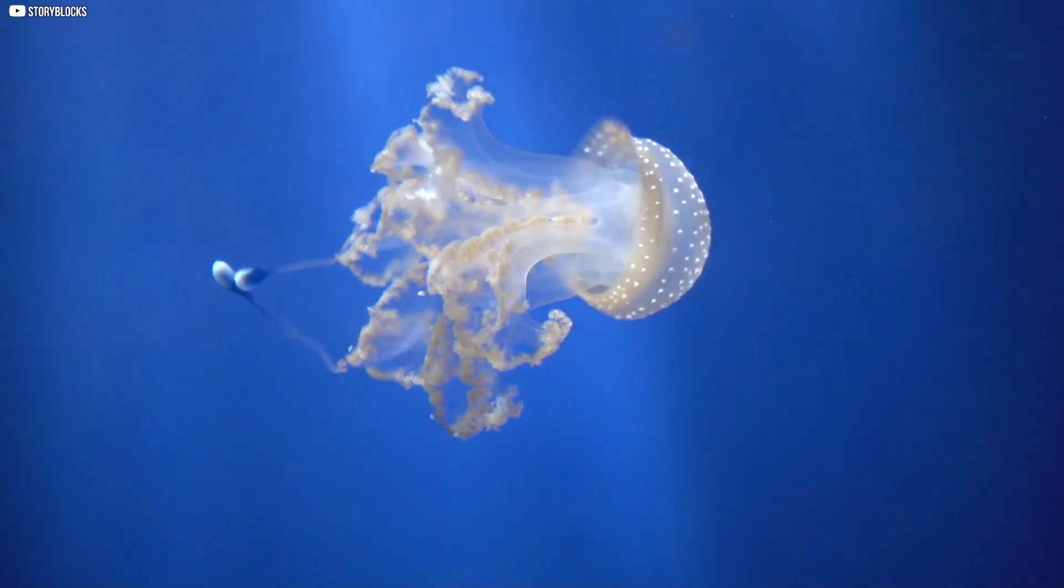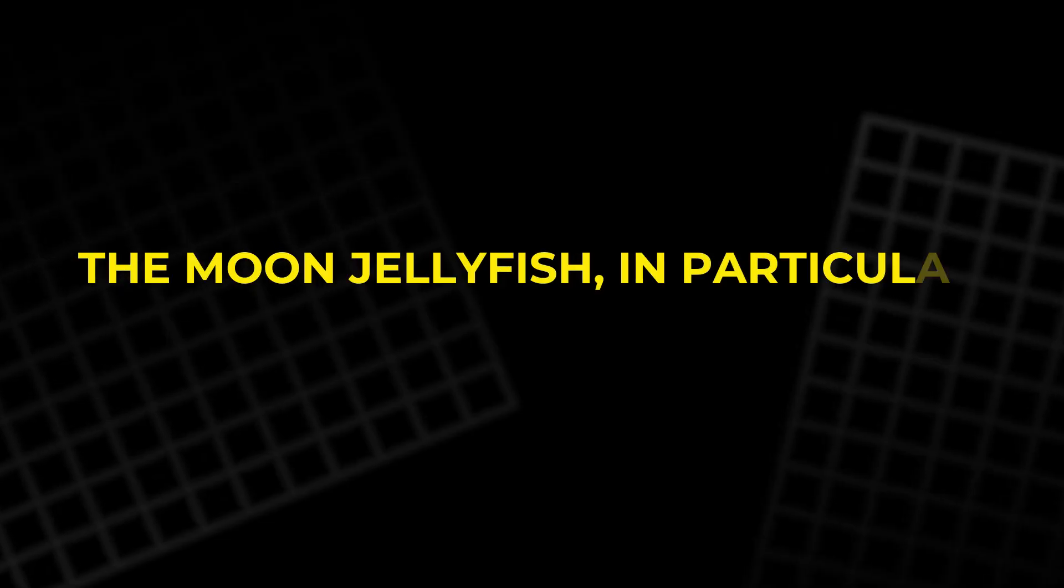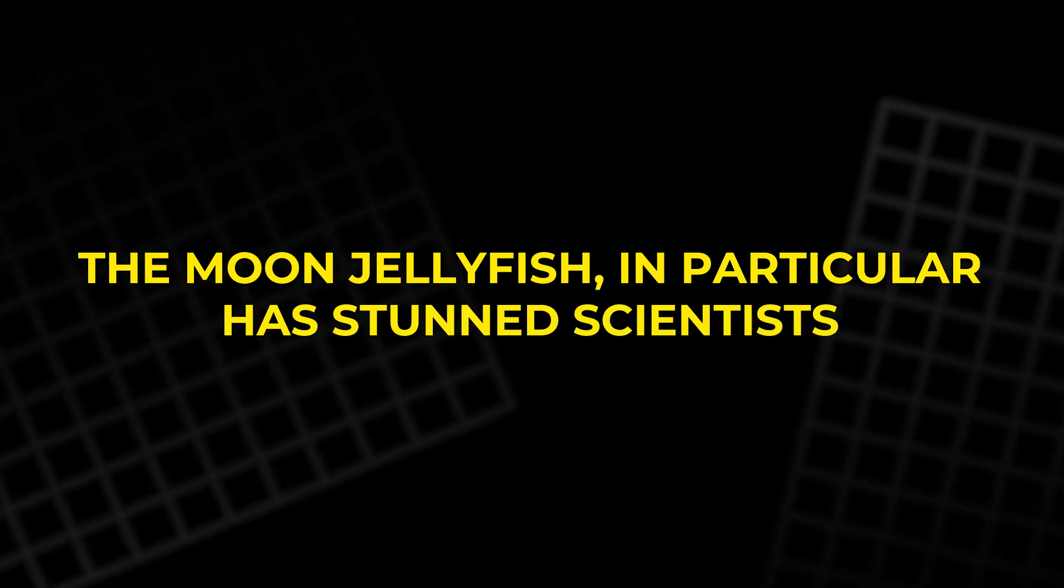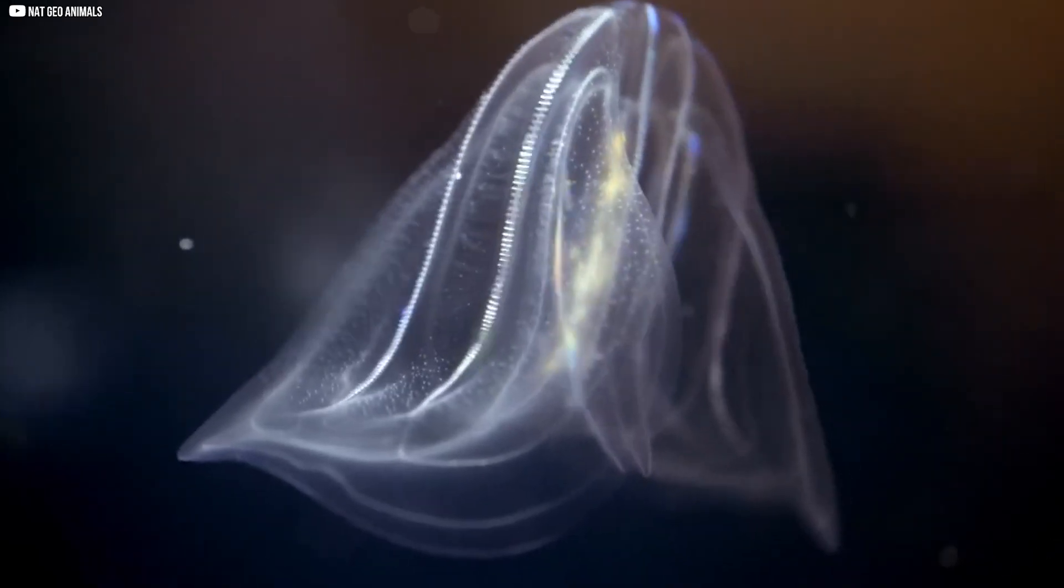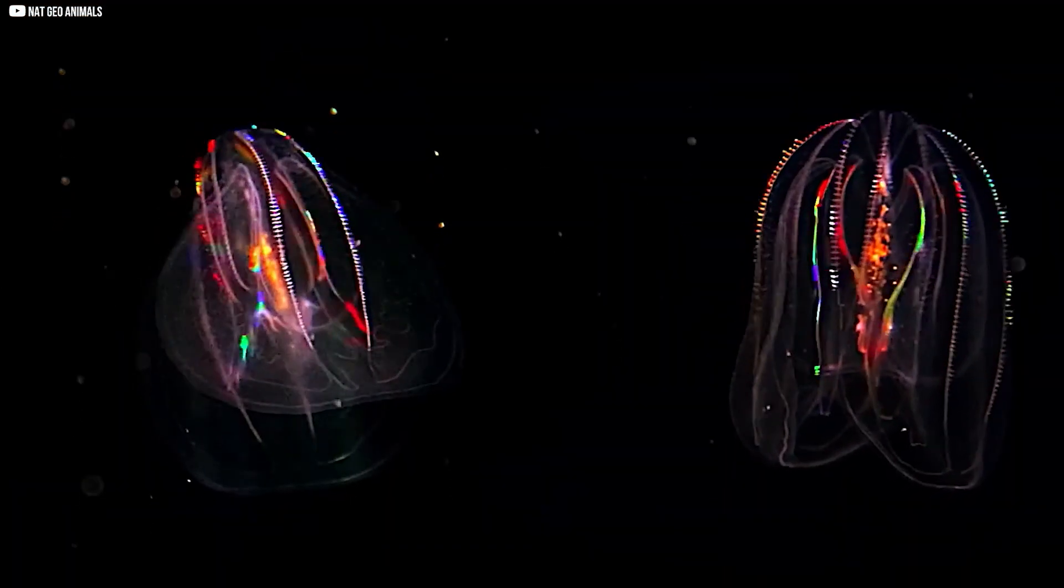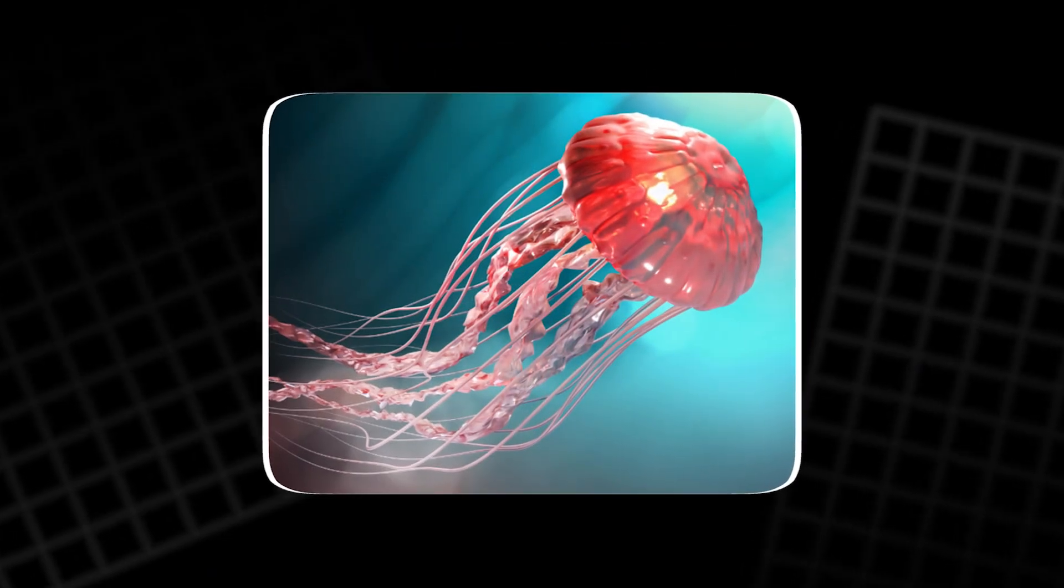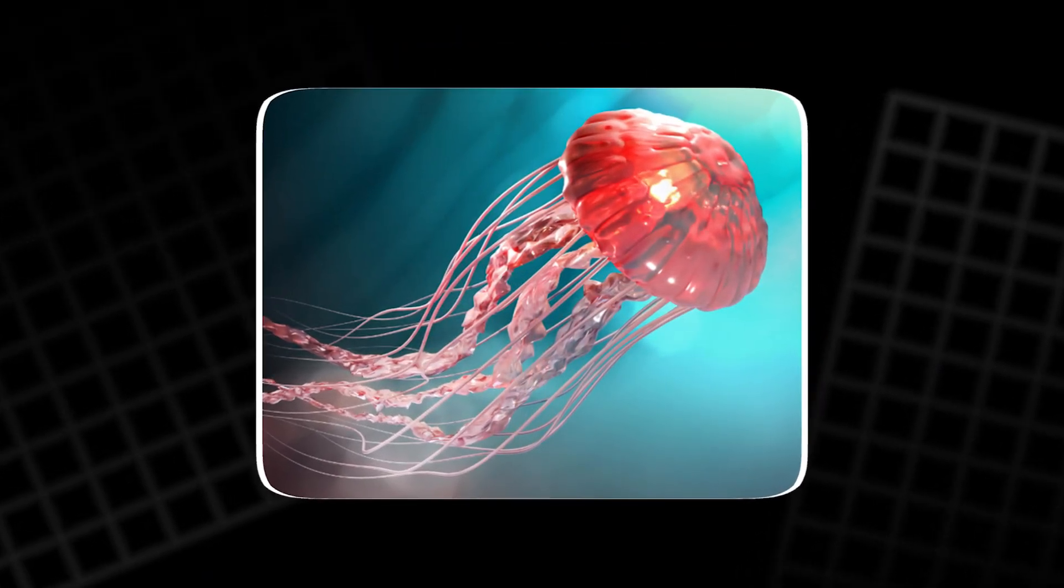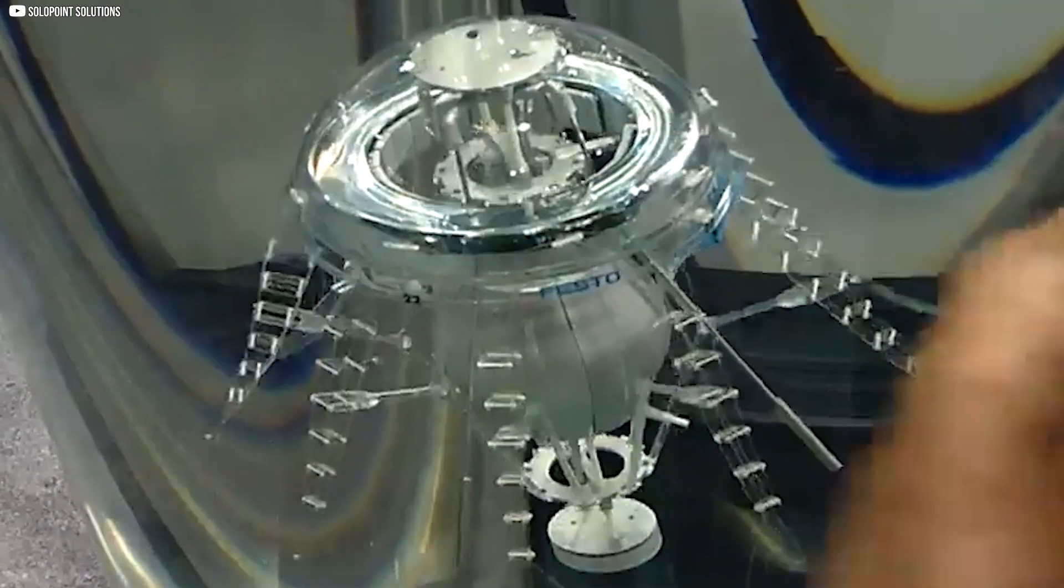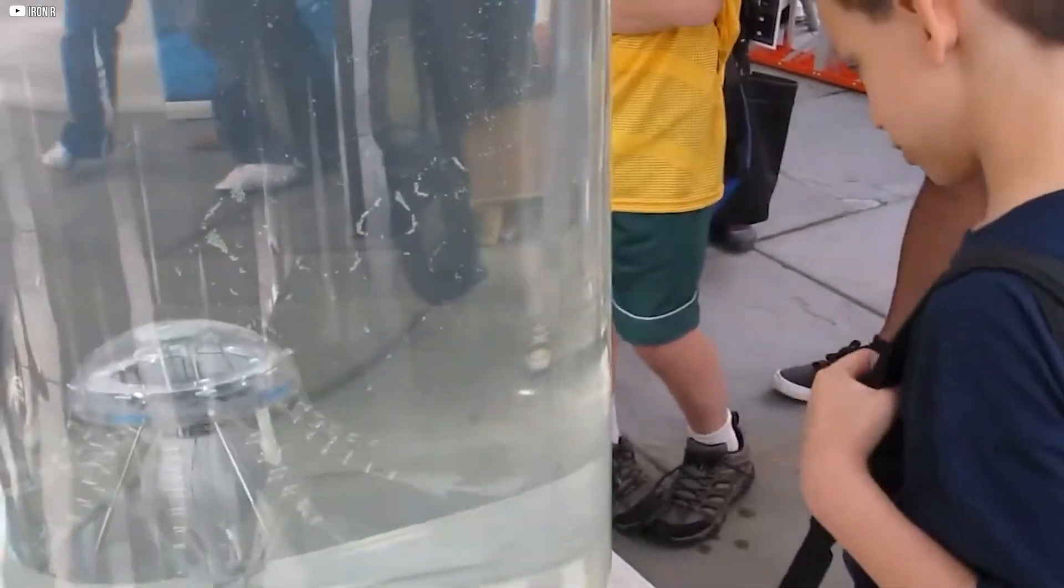This process, called passive energy recapture, is incredibly efficient. The moon jellyfish has stunned scientists. When they compared thousands of creatures, runners, flyers, and swimmers, they found it has the lowest cost of transport of them all. That's a fancy way of saying it uses the least energy to go the farthest, which is exactly what engineers want from propulsion. The jellyfish has no skeleton, no fins, no fuel, just muscle, water, and time. And it wins.